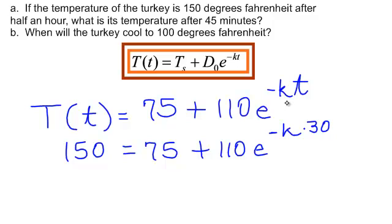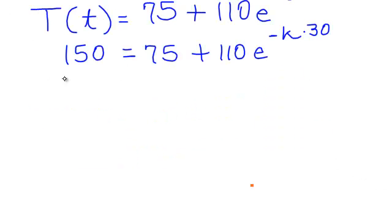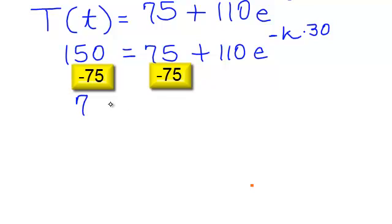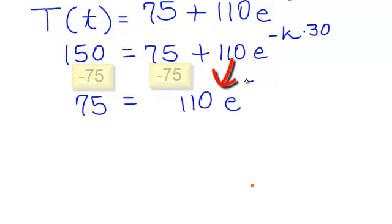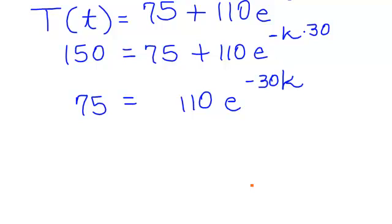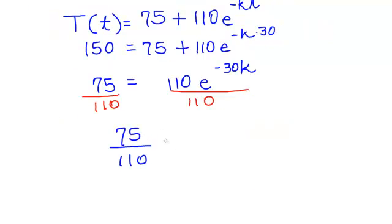I need this K. I need to know when it comes to turkeys, how quickly do they cool down? Well, I was given a fact that after 30 minutes it's 150 degrees, so with that information I'm going to find this K. I want the K, so I will subtract 75 from both sides. E to the negative K times 30, same thing as negative 30K. Divide both sides by 110.